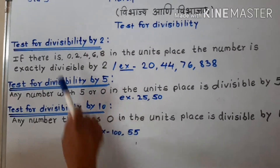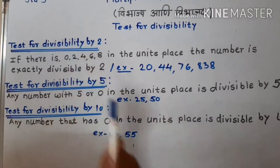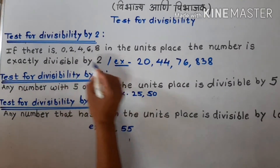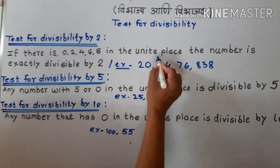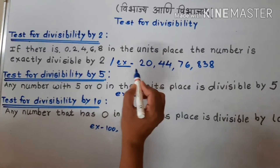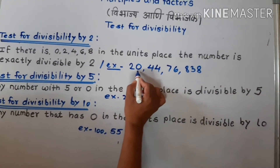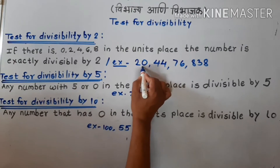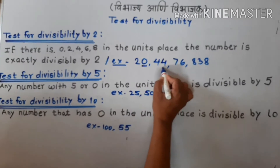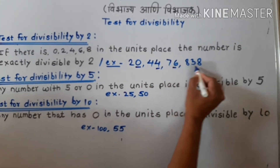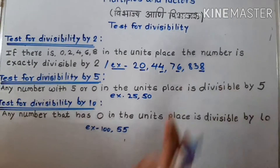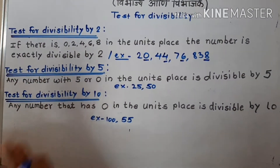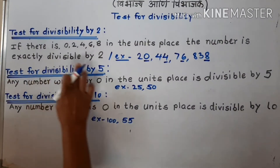With this rule, if the number has 0, 4, 6, or 8 in the unit place, the number is divisible by 2.